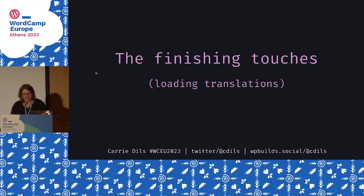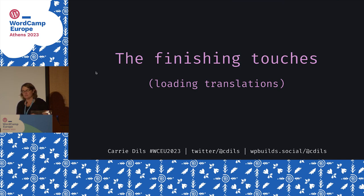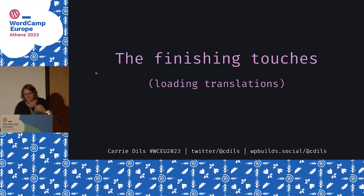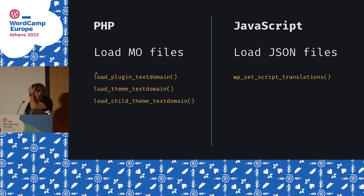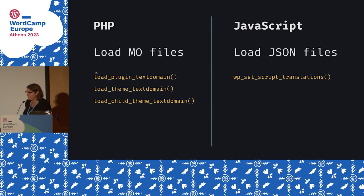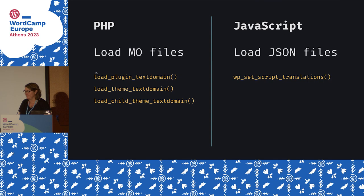The last piece of the puzzle: it's the developer's job to load these translations. For MO files containing PHP translations, there are load_plugin_textdomain, load_theme_textdomain, and load_child_theme_textdomain — used respectively for plugins, themes, and child themes. For JSON files containing JavaScript translations, there is wp_set_script_translations.